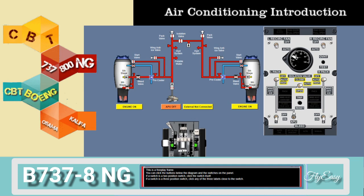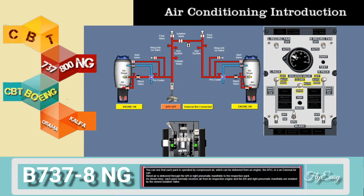There are two-position switches and three-position switches. Each pack is operated by compressed air which can be delivered from an engine, the APU, or an external air cart. Bleed air is delivered through the left or right pneumatic manifolds to the respective pack. Each pack normally receives air from its respective engine, and the left and right pneumatic manifolds are isolated by the closed isolation valve.